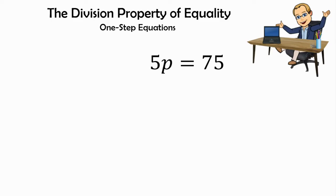5p equals 75. We know the operation between the coefficient and the variable is multiplication. So the inverse of multiplication is division. We're going to divide both sides by the coefficient, which is 5.